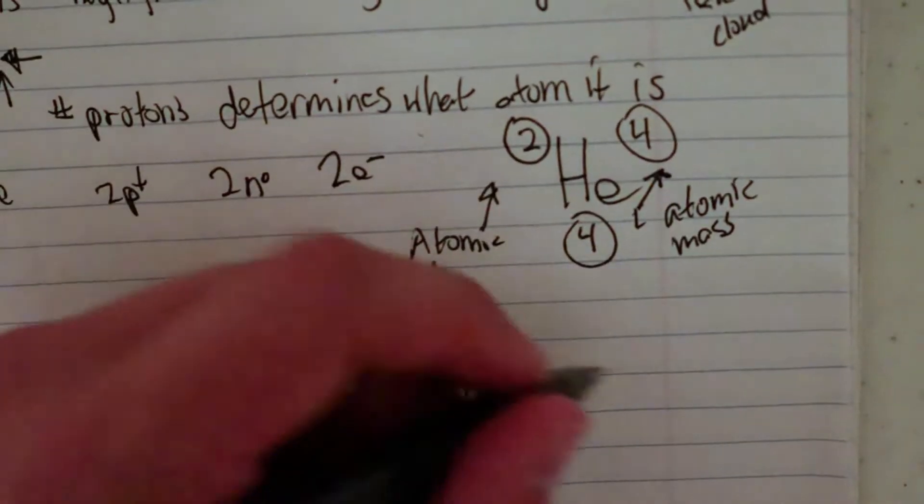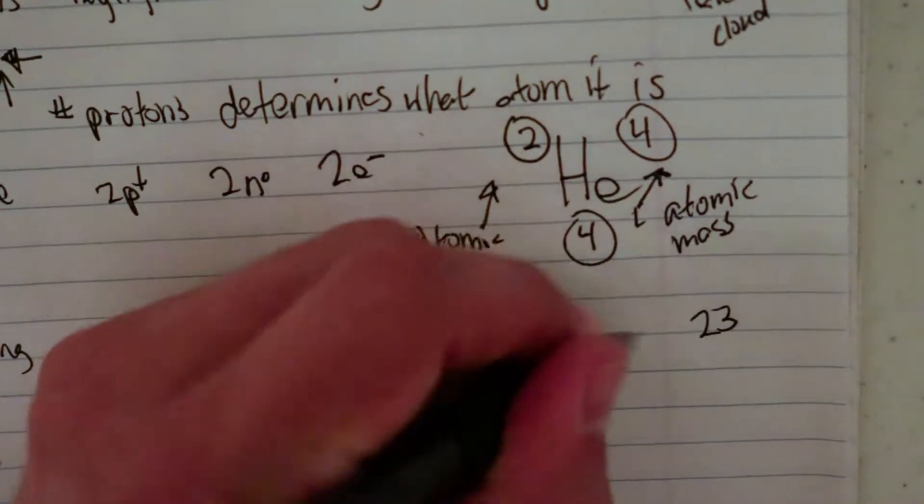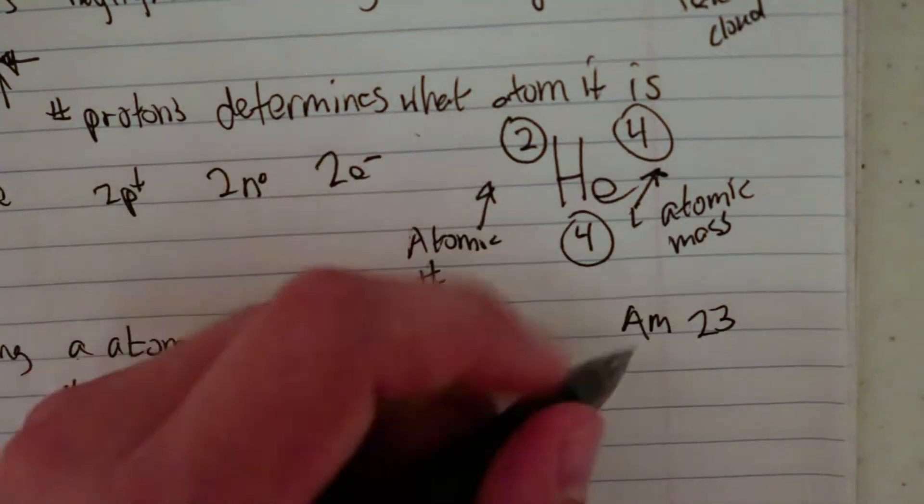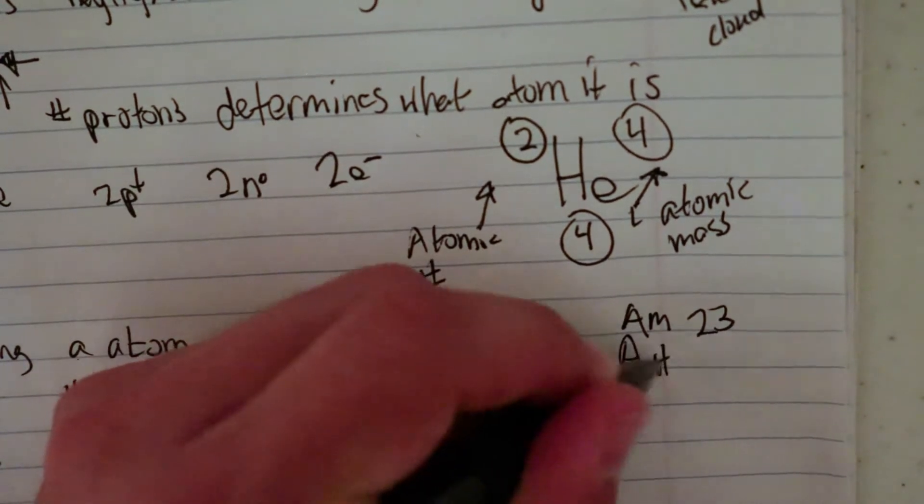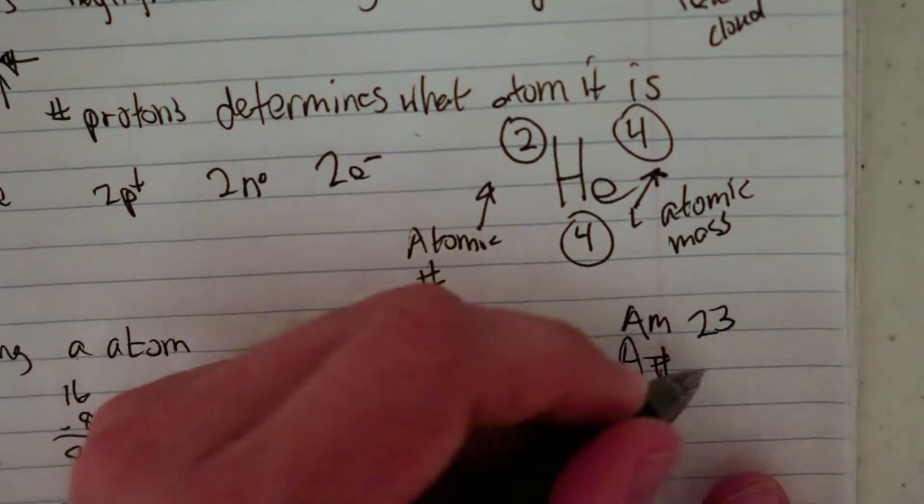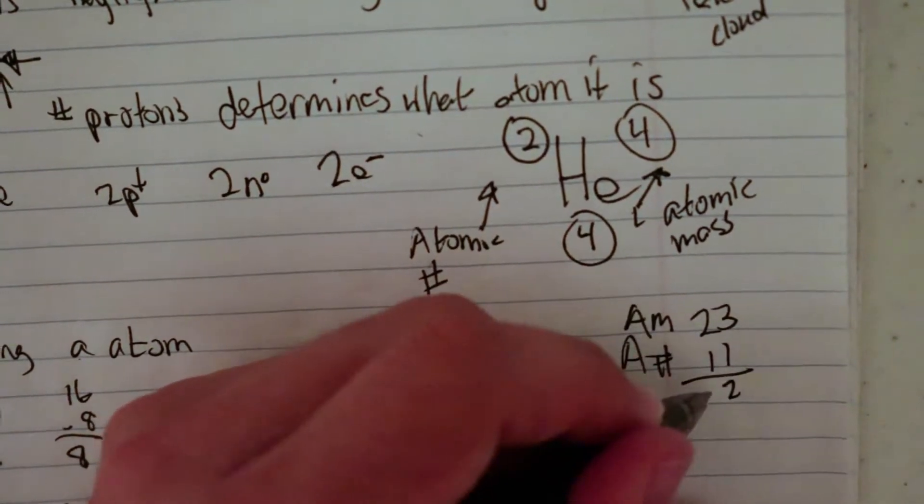The number of neutrons, that's going to be 23, the atomic mass, minus the atomic number. So that's going to be 11, and that's going to get me 12.